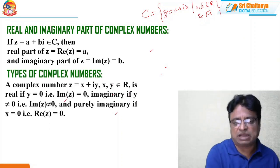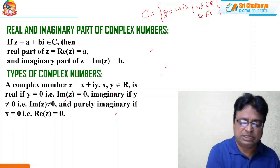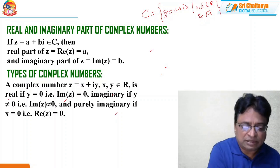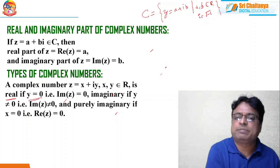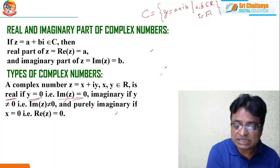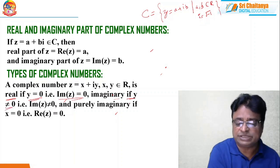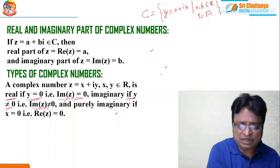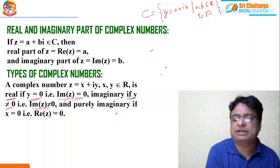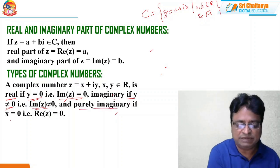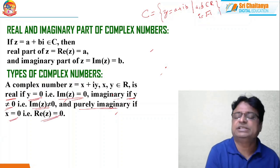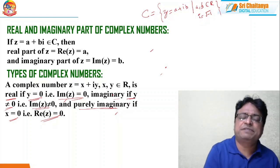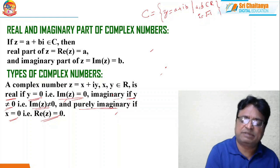Now, the same things I have explained here — types of complex numbers. A complex number z = x + iy where x, y belong to ℝ. It is real if y = 0, that is imaginary part is 0. It is imaginary if y ≠ 0, that is Im(z) ≠ 0. Similarly, purely imaginary if x = 0, that is Re(z) = 0. These are the simple clear-cut differences between a complex number existing in different forms.